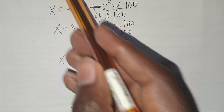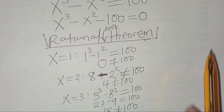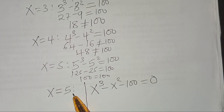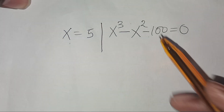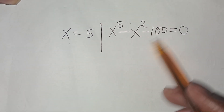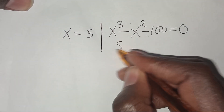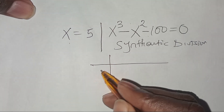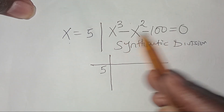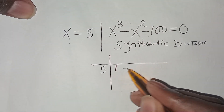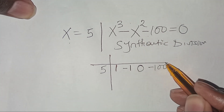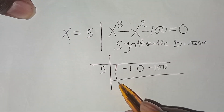Now since we have a cubic polynomial function — x cubed, subtract x squared, subtract 100 equals 0 — and x equals 5 is one solution, we can reduce this cubic to a quadratic equation by applying synthetic division. For synthetic division with x equal to 5, the coefficients of the cubic function are: 1 for x cubed, negative 1 for x squared, 0 for x (since there's no x term), and negative 100 as the constant. Dropping the leading 1 down, we begin.